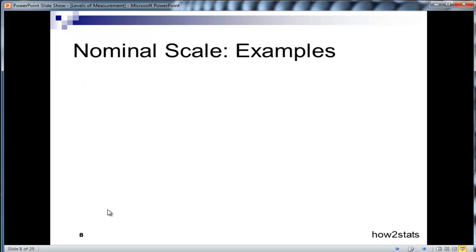So let's look at some examples. Biological sex is a commonly used variable, and it's measured on a nominal scale because we basically have male and female. I realize it can get more complicated than that, but in most cases, biological sex is measured on a nominal scale.